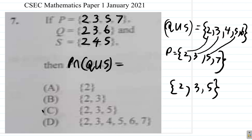So the answer is C. C has 2, 3, 5. All right, thank you.